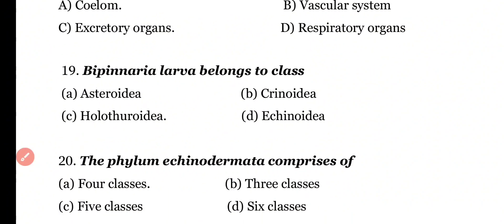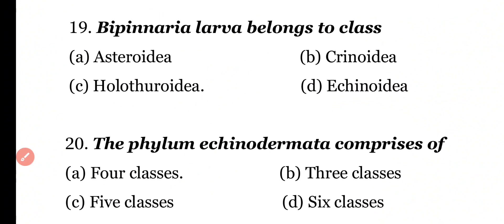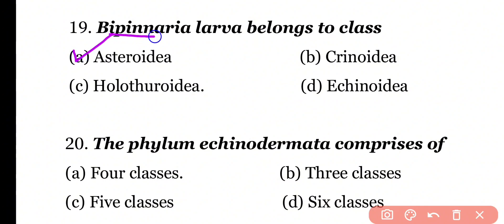Question 19: Bipinnaria larva belongs to the class Asteroidia, Crinoidia, Holothuroidea, or Echinoidia? Correct answer is Option A. Bipinnaria larva is present in class Asteroidia.